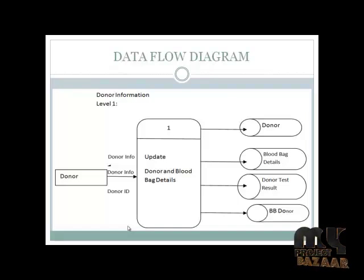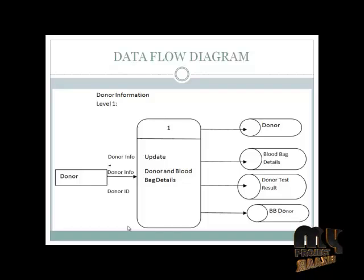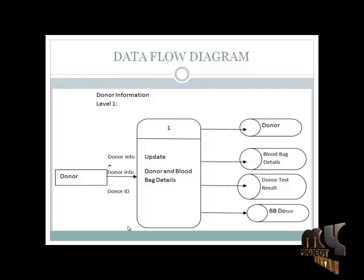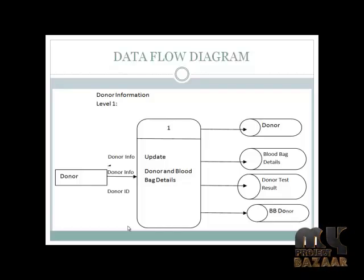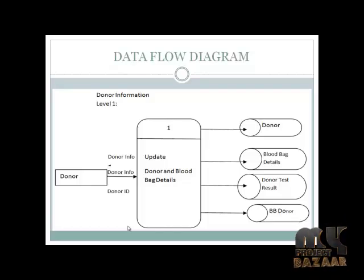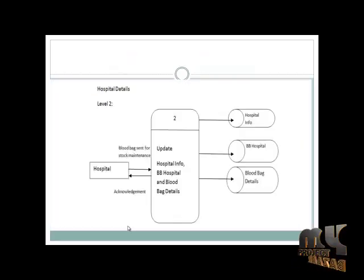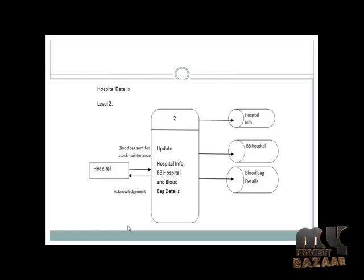Level 1 is donor information. The donor detail will be inserted into different databases, including donor blood bag detail, donor test results, etc. It is used to find out the particular detail of a donor clearly. Level 2 is hospital detail, which works similarly to donor detail.